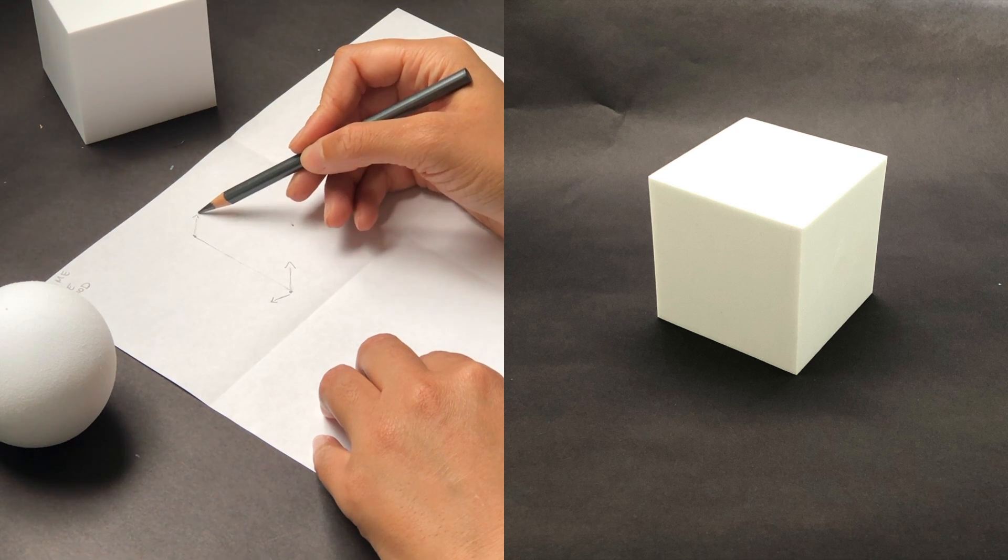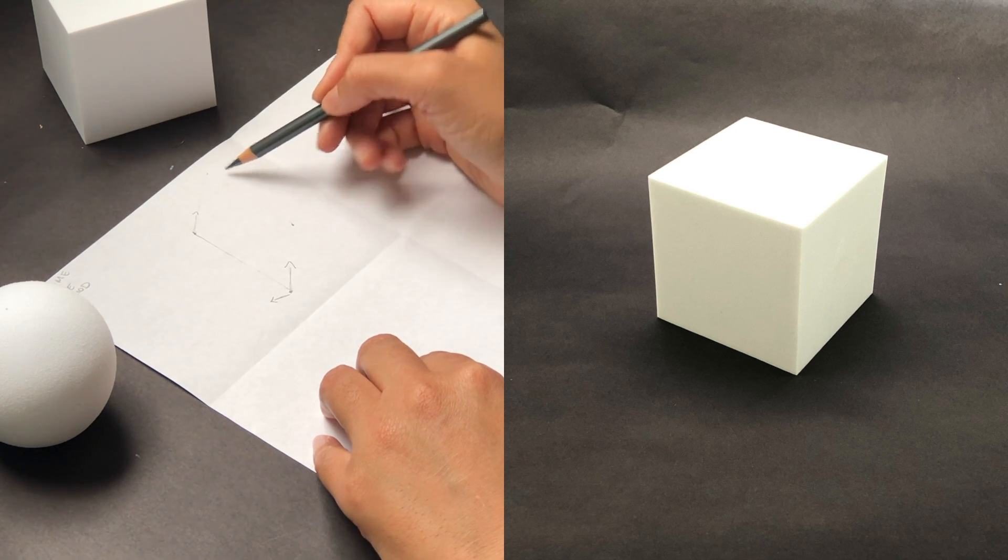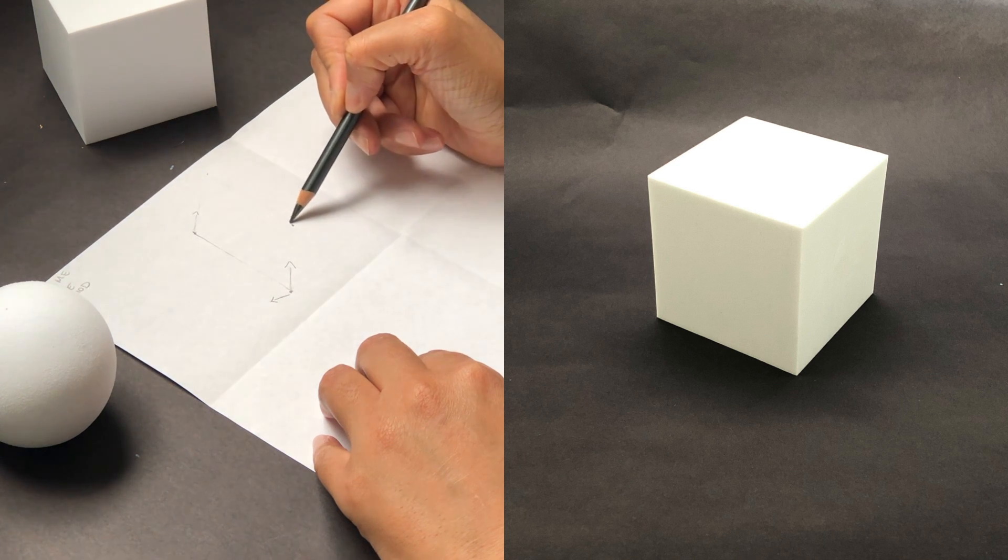So we're drawing the right side of the cube, the side facing toward the right side of your paper.